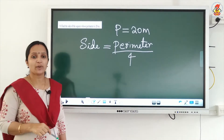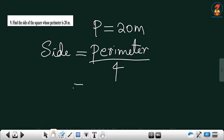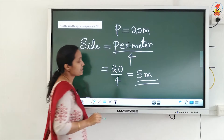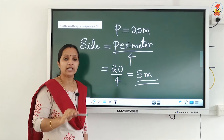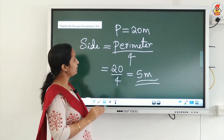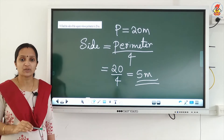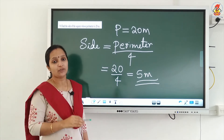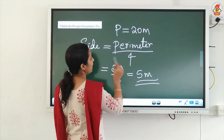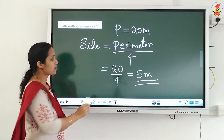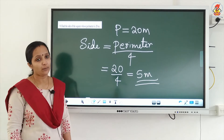In the case of a square, the formula is perimeter divided by 4, that means 20 divided by 4, and the answer is 5 meter. The square has 4 sides and the perimeter is 20 meter, so dividing by 4 gives us 5 meter. I hope it is clear.